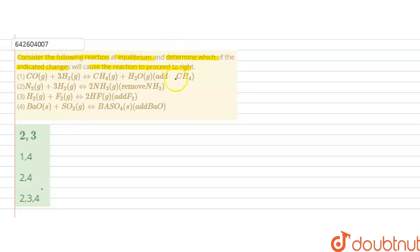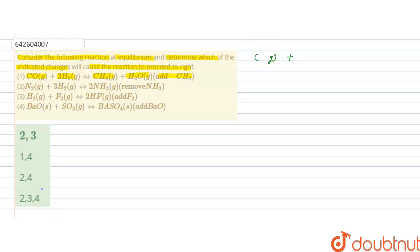If we go to the first reaction, that is carbon monoxide gas plus three hydrogen gas forms methane plus water in gaseous state. The indicated change is to add CH₄ to this reaction.